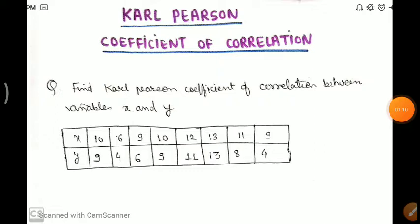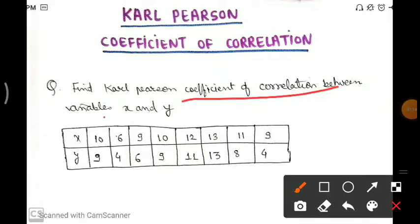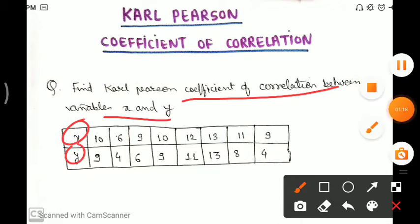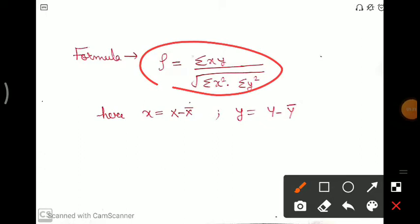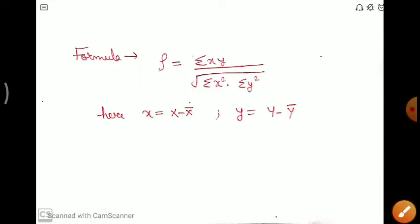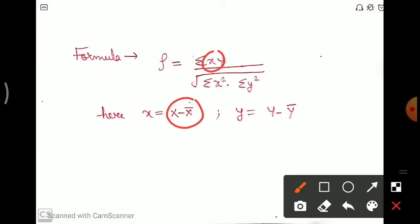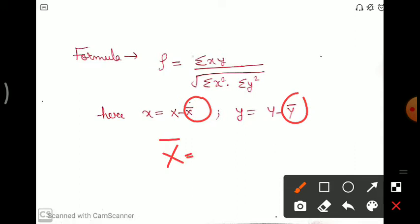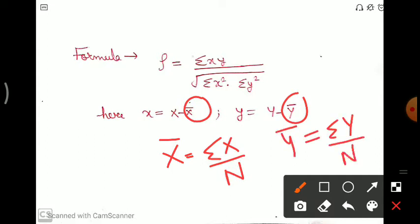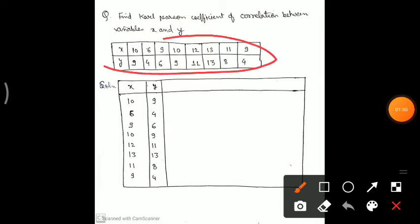So let's start our topic by shortcut method. The question is: find the Karl Pearson coefficient of correlation between variables X and Y. We will use this formula, where rho (sometimes also denoted by R or P) is the coefficient. Here, small x is X minus X-bar, and small y is Y minus Y-bar. X-bar is the mean of X values, that is summation X upon N, and Y-bar is summation Y upon N.